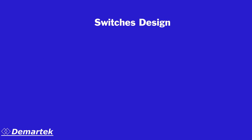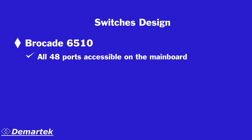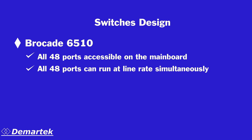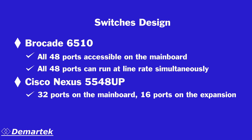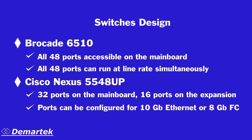The two switches are designed differently. The Brocade 6510 is designed so that all 48 ports are accessible on the main board and can run at full line rate simultaneously. The Cisco Nexus 5548UP has a main board with 32 ports and an expansion unit with 16 ports. The unified ports on the Cisco switch can be configured for 10GB Ethernet or 8GB fiber channel.